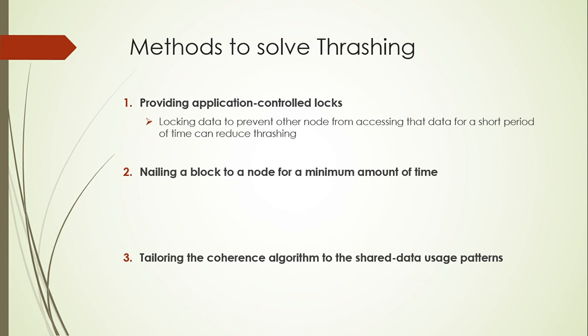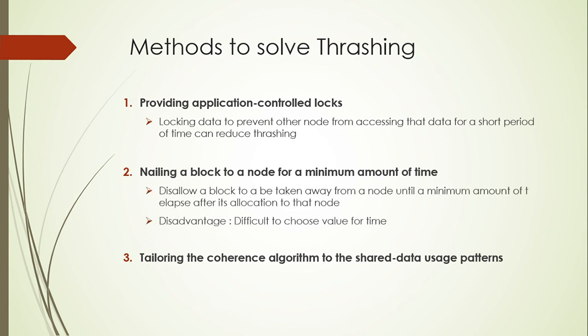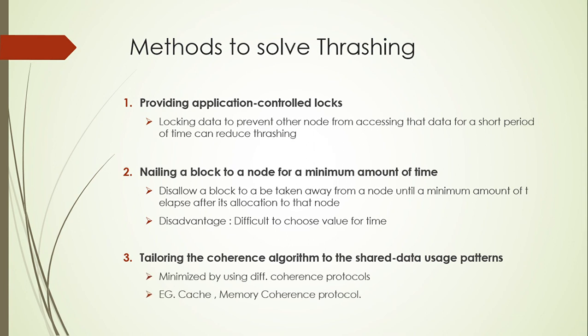Nailing a block to a node for a minimum amount of time disallows the block from being taken away from a node until a minimum amount of time has elapsed after allocation. Its disadvantage is that because allocation is dynamic, it is difficult to choose the appropriate time value. The third method — tailoring the coherence algorithm to shared data usage patterns — minimizes thrashing by using different coherence protocols such as cache coherence protocol or memory coherence protocol.